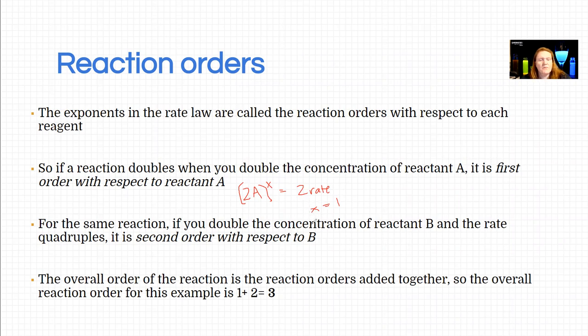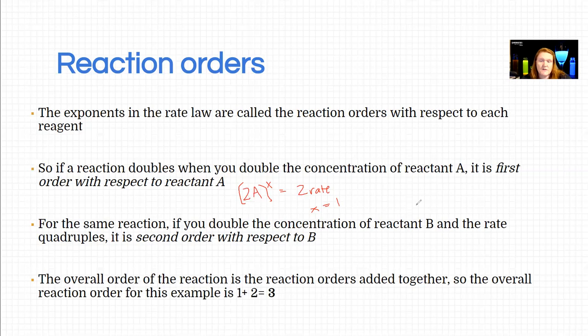So if you double the concentration of a different reactant, so in this case B, and the rate quadruples, so 2B raised to the y equals 4 times the rate now, that's what quadruples means, quad 4. Then the only way that can be true is if y is 2, because 2 squared equals 4.